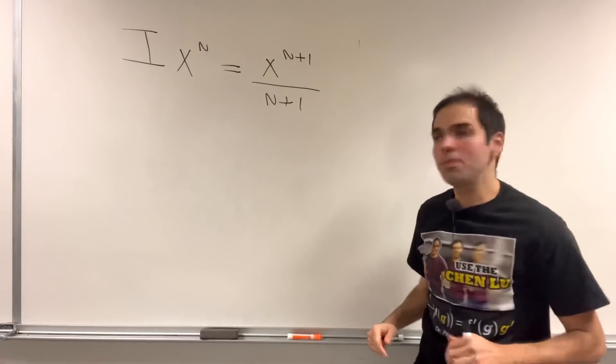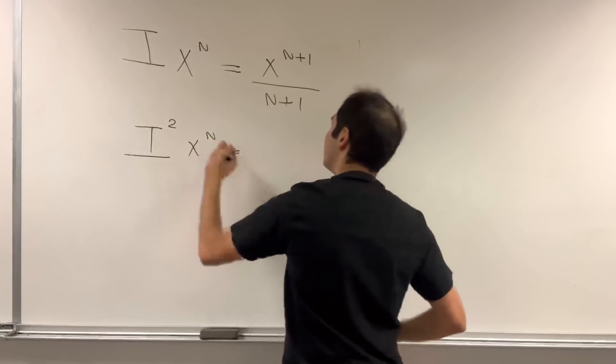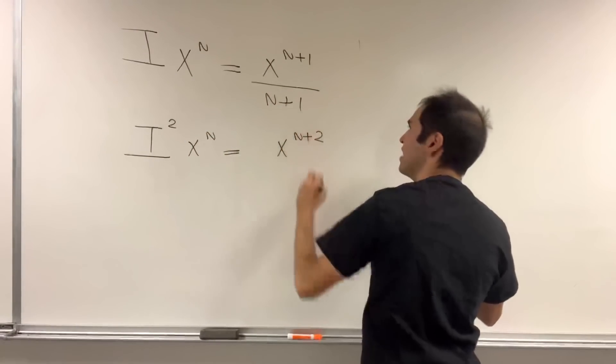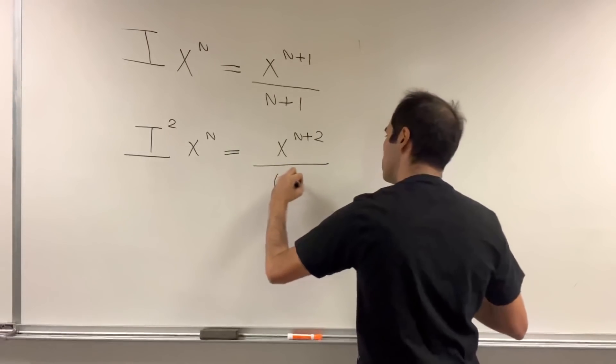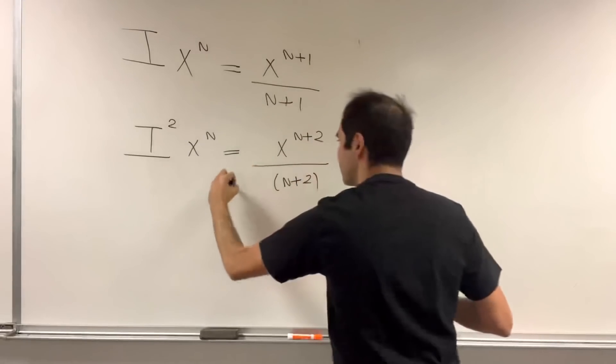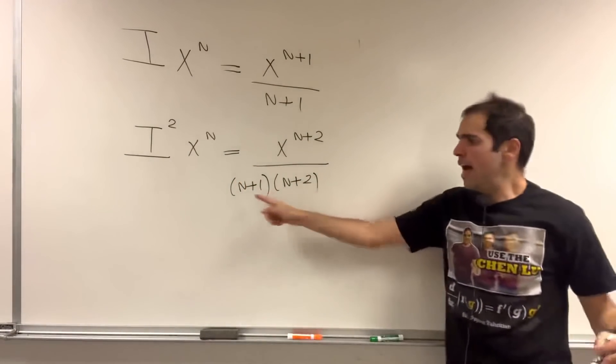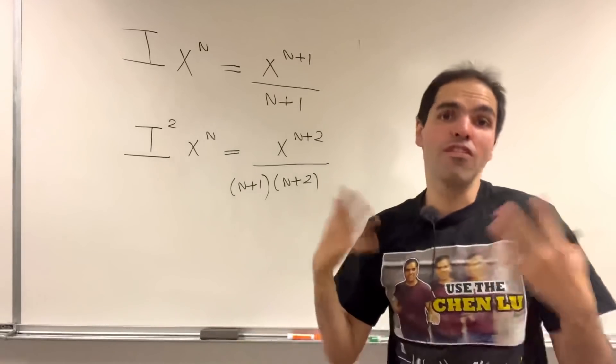And then, if you play the spiel again, you get the double integral of x to the n. Now again, another power comes up, x to the n plus 2 divided by n plus 2, but we also have this n plus 1. And well, n plus 2 times n plus 1, this looks like the beginning of a factorial.